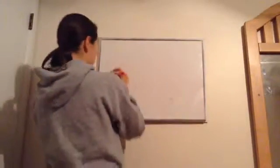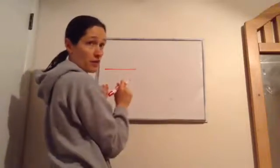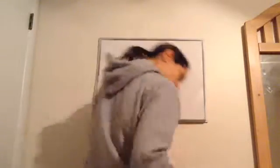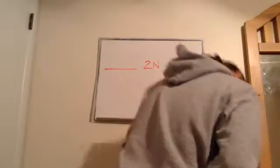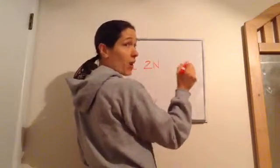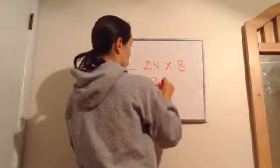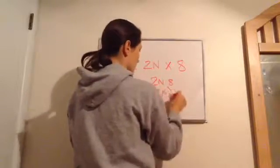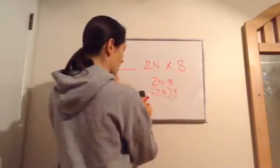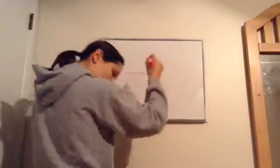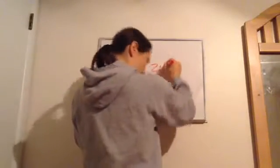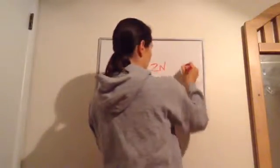This next one says 'the product of' — underline 'the product of' — 'twice a number and eight.' I'm finding the product of twice a number and eight. You can write it as 2n times 8, or any equivalent form. Then: 'the sum of twice a number and negative five' — I'm finding the sum of those.